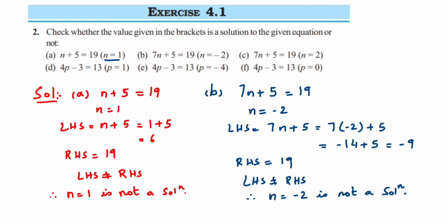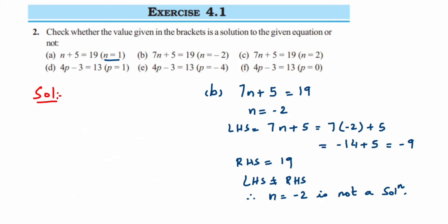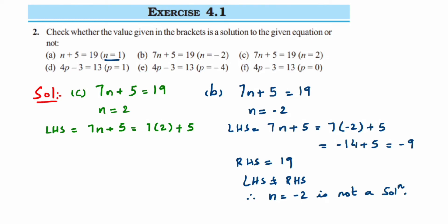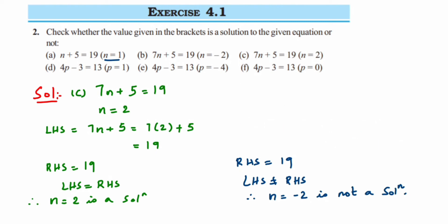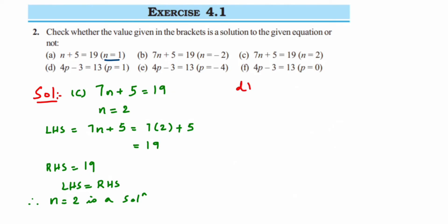The third equation is 7n plus 5 is equal to 19, and the n value here is 2. LHS is equal to 7n plus 5 — substituting n=2 gives 7 times 2 plus 5, which is 14 plus 5, equal to 19. The RHS is also 19. Clearly LHS is equal to RHS, so we can conclude that n=2 is a solution of the given equation.